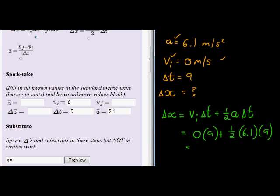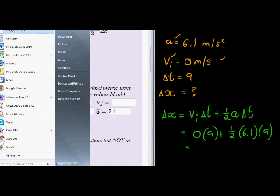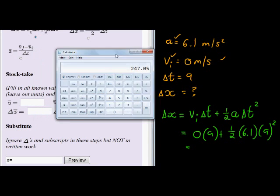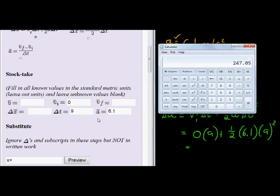And when we solve that, let's go solve it using our calculator. So we have 9 times 0, which will obviously just be 0, plus a half, which is 1 over 2 times 6.1 times 9. And I see I've neglected my square here. There must be a 9 squared. 9 squared gives us 247.05.